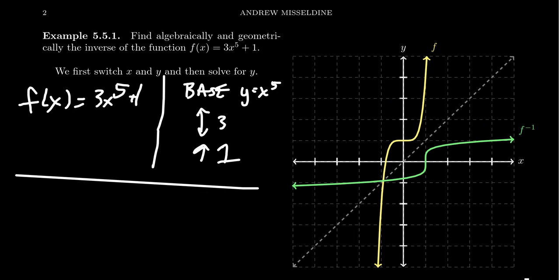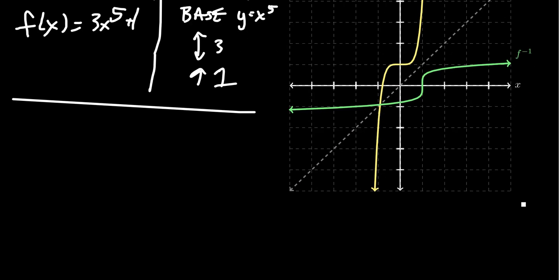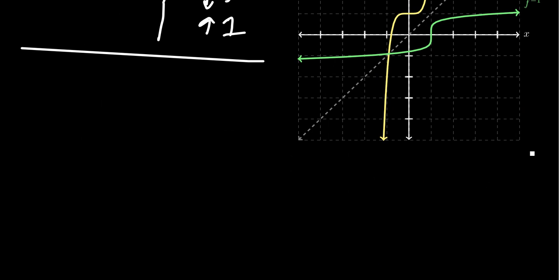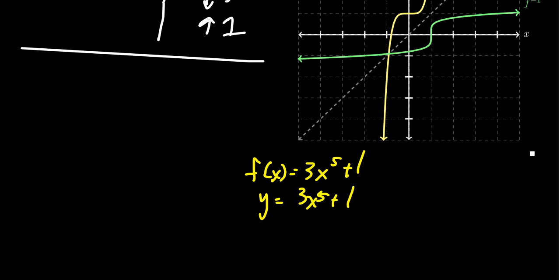Since it's one-to-one, it should have an inverse function. To compute the inverse function, we're going to use the technique we developed previously. We have f of x equals 3x to the fifth plus one. When trying to solve for the inverse function, replace the function notation with y, so y equals 3x to the fifth plus one. Then switch the roles of x and y, which gives us x equals 3y to the fifth plus one. Then proceed to solve for y.